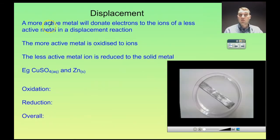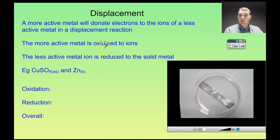So if you put a more active metal in a solution of a less active metal's ions, you get a displacement reaction occurring. The more active metal that you put in oxidizes to ions of that metal, and the less active metal's ions are reduced to that solid metal. So let's have a look at an example.